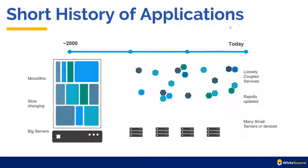Before about 20 years ago, we had big servers, slow-changing code and versions, and monolithic applications, as opposed to today's microservices. The change came because of a business reason: we need to deliver software a lot faster to beat our competitors. That's why the idea of microservices came about — small pieces of code, loosely coupled, with smaller servers, and sometimes even serverless.